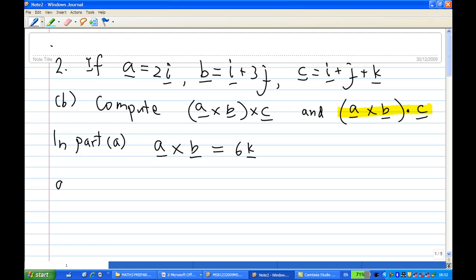Therefore, a cross b cross c is actually 6k cross with i plus j plus k where c is i plus j plus k.